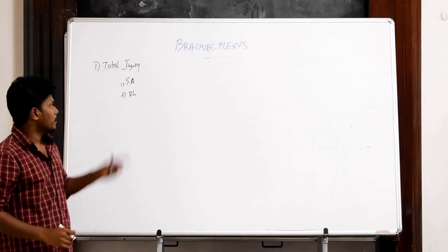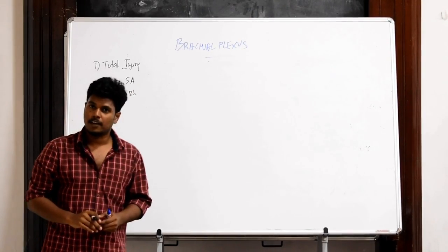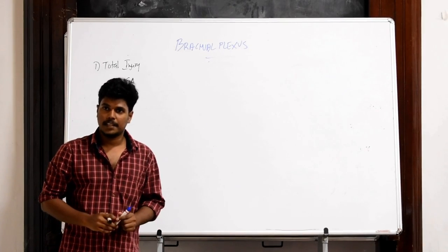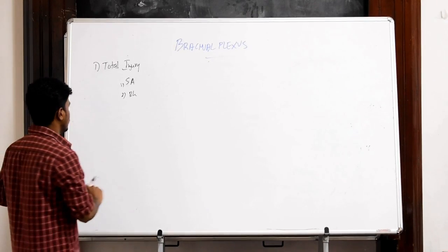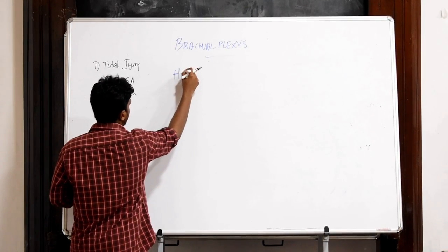Also, the T1 ventral rami has supplied the sympathetic fibers. So, the total injury to brachial plexus causes sympathetic problems which are summarized by a syndrome known as Horner's syndrome.